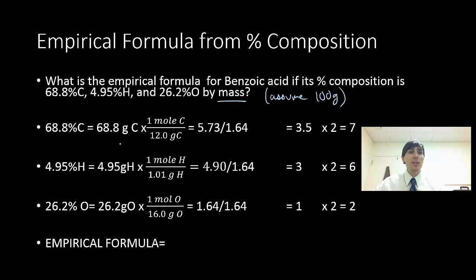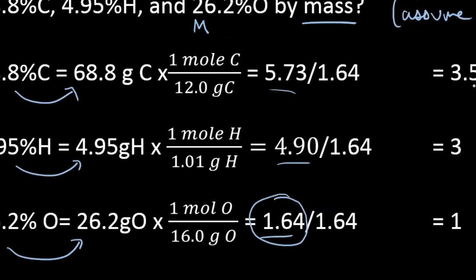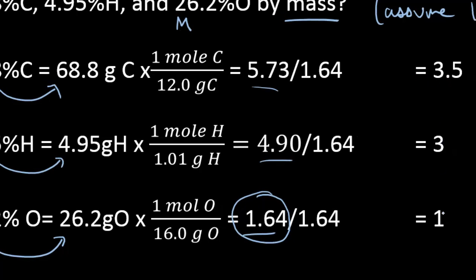If I have 100 grams, this makes it really nice because 68.8% of the compound is carbon. That means that 68.8 grams is going to be carbon. So we're going to turn all those percentages directly into grams, and then solve the problem the exact same way. Convert our grams to moles using the molar mass. Divide by the molar mass. We get our moles of compound. Once we have our moles, we're going to take each of those. This is step 3, and we're going to divide them by the lowest number of moles present, 1.64.